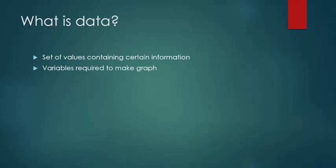There are two kinds of variables: one is the independent variable and the other is the dependent variable. The independent variable is the one that does not depend upon any other value present in the data or set of values. The dependent variable depends upon the independent variable. Usually the independent variable is taken along the horizontal axis and the dependent variable is taken along the vertical axis while plotting the graph.